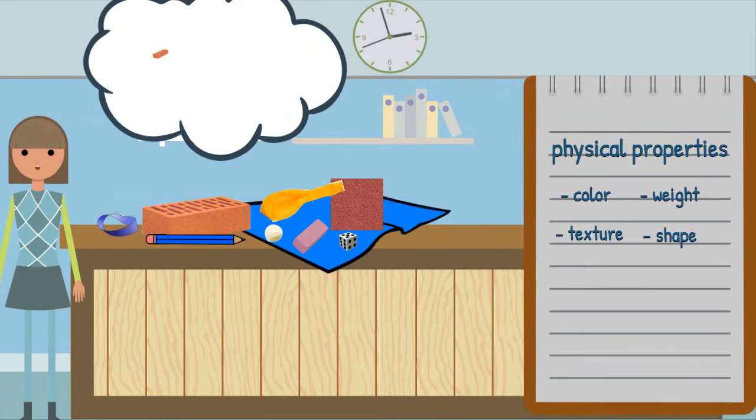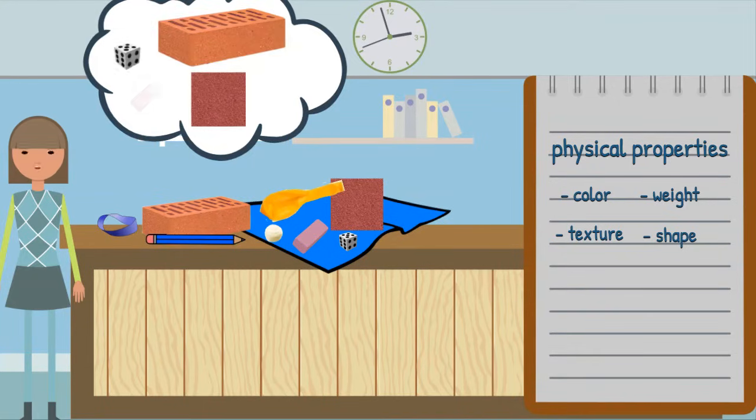Shape is another physical property. Words like round or square can be used to describe shapes. The brick, sandpaper, die, and eraser are all square or rectangle shaped. They have straight edges.